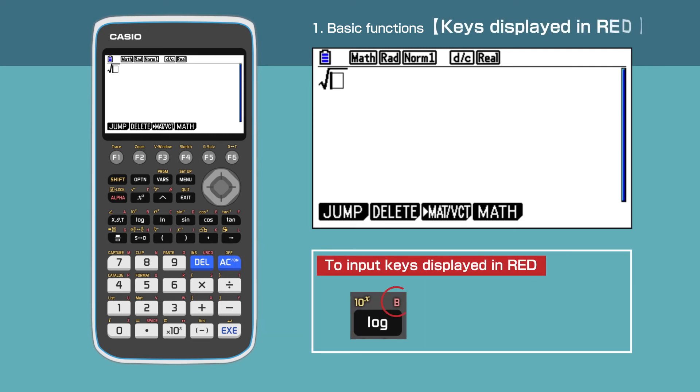Next, we'll show how to select keys displayed in red. To select the B in red above the log key, first enter Alpha. You'll see the symbol A in red on the top left corner. Press log to get B. We have successfully entered B.